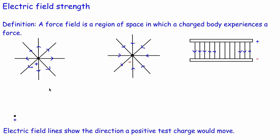Just like we did with gravitational fields, we can look at the field line patterns associated with two different types of fields. First of all, the radial field — these two diagrams are both radial fields. Or alternatively, a uniform field, which is this one here.